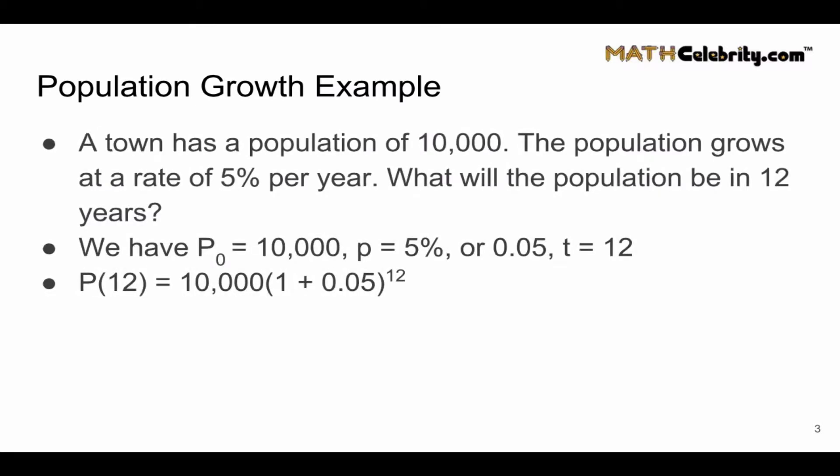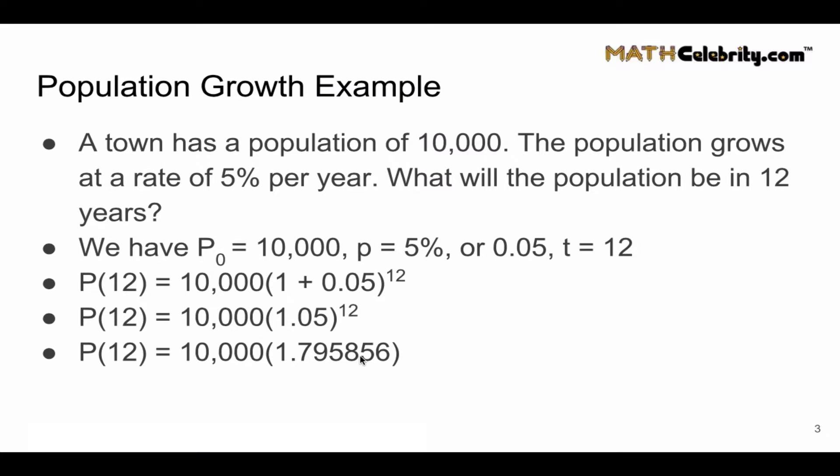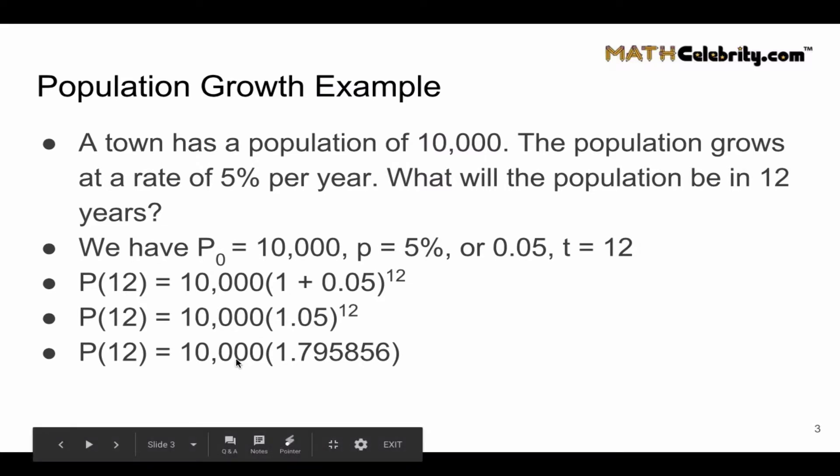Using the population growth formula, we plug in our numbers, we simplify, and we get this. So now we need to evaluate 1.05 raised to the 12th, which is 1.795856, and we're going to multiply that growth factor times 10,000.